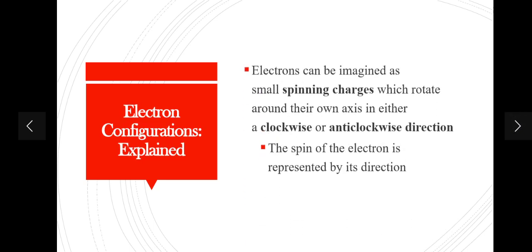These electrons are tiny particles carrying a negative charge. These negatively charged electrons can be imagined as small spinning charges which rotate around their own axis in either a clockwise or anti-clockwise direction. The spin of the electron is represented by its direction. Some electrons may spin clockwise and some anti-clockwise, but they will only follow one direction — they will not switch.